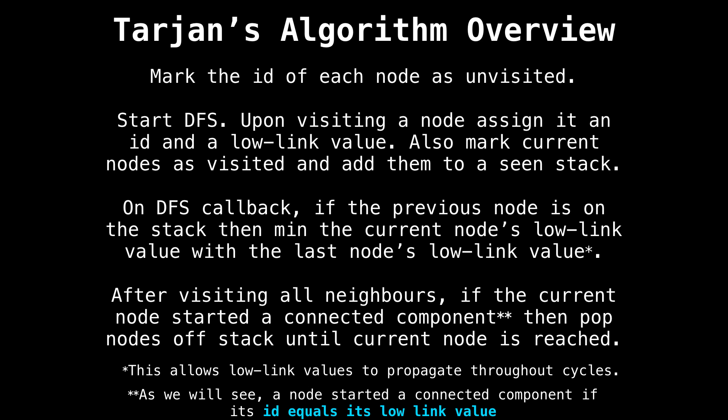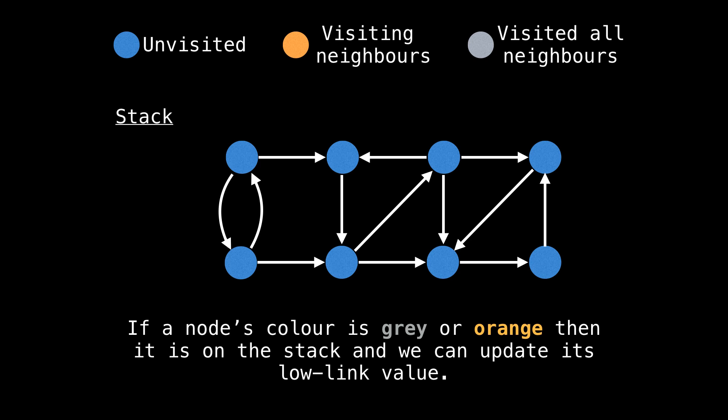This is essentially what will allow low link values to propagate throughout cycles. After visiting all the node's neighbors, if the current node started the strongly connected component, then pop off all nodes from the stack which are in the strongly connected component. You know a node started a strongly connected component if its ID is equal to its low link value.